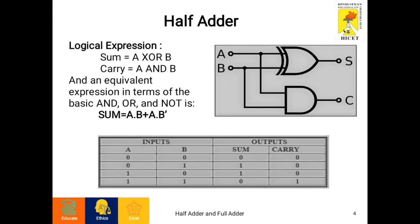Now let's see the logical expression for the half adder. The sum is equal to A XOR B, and carry is equal to A AND B. An equivalent expression in terms of basic AND, OR, and NOT is: sum equals (A AND B̄) OR (Ā AND B).